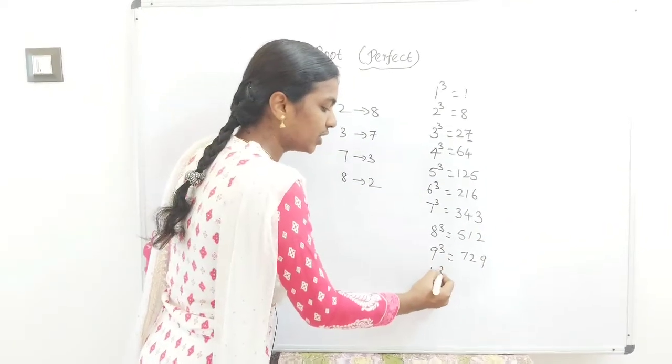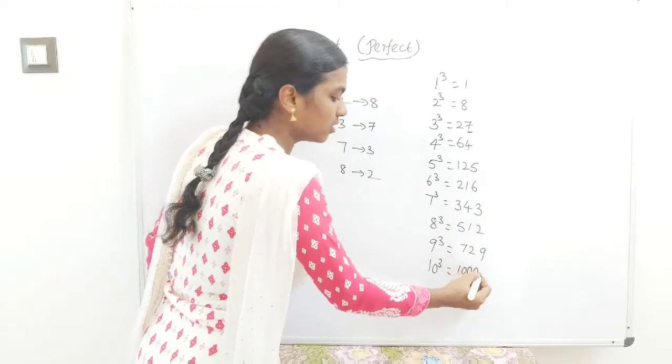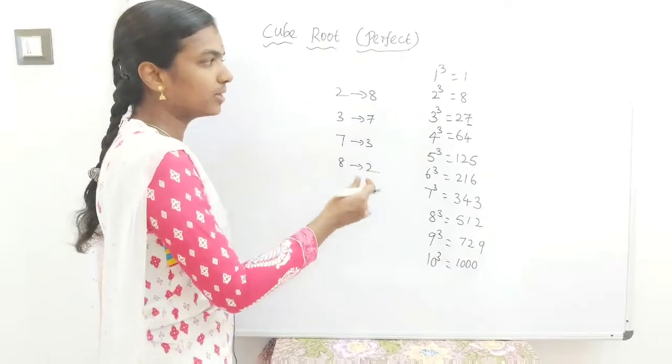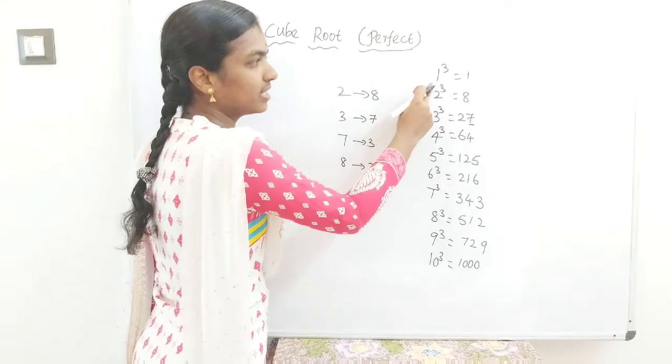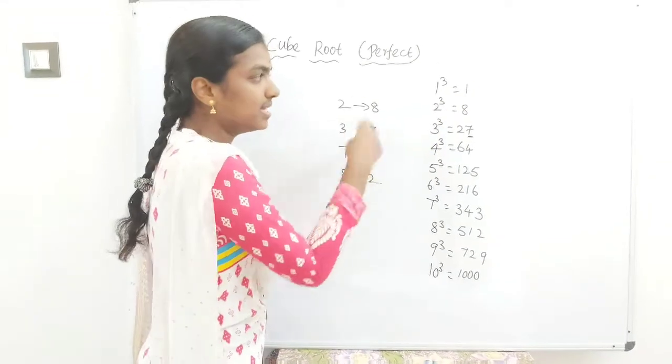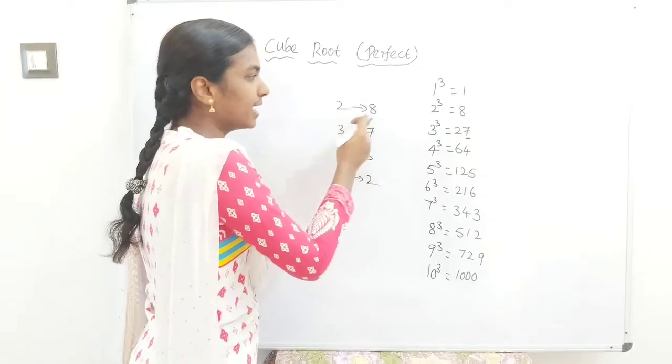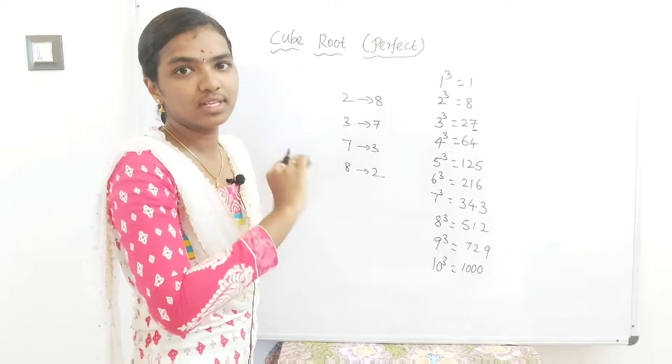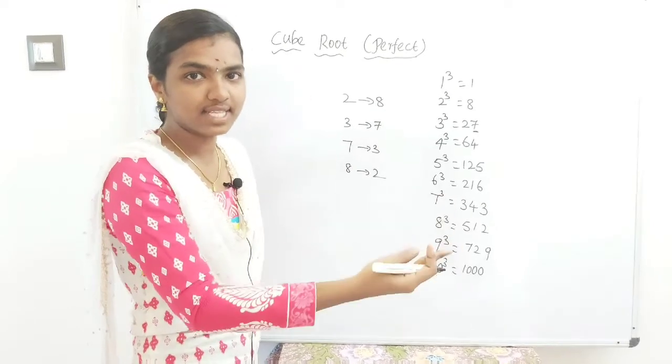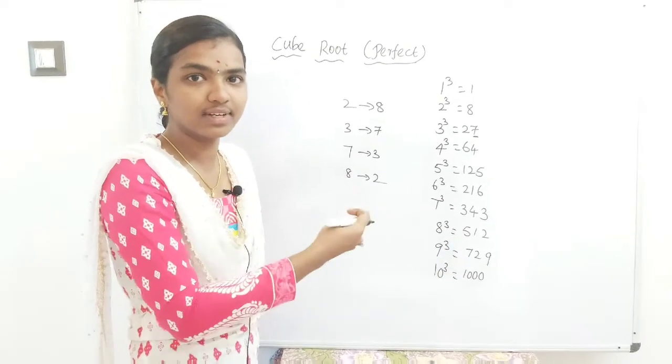10³=1000. How to remember: except 2, 3, 7, and 8, everything else - if starting is 1 means ending is 1. If it's 2 means 8, 8 means 2. If 3 means last digit is 7, if 7 means last digit is 3.